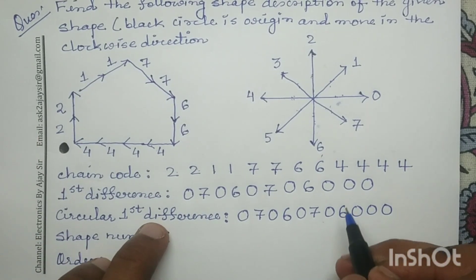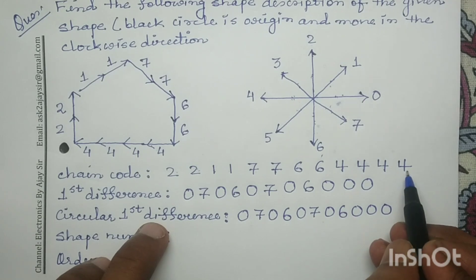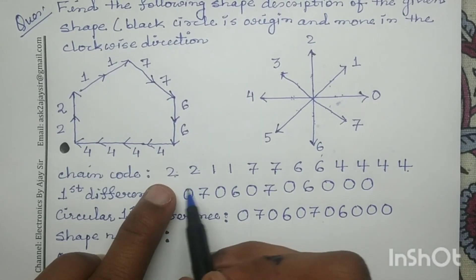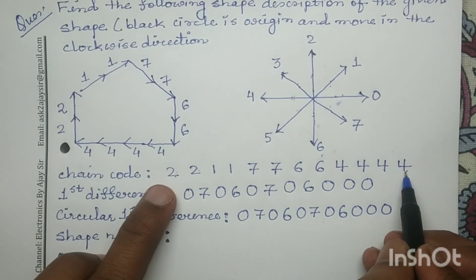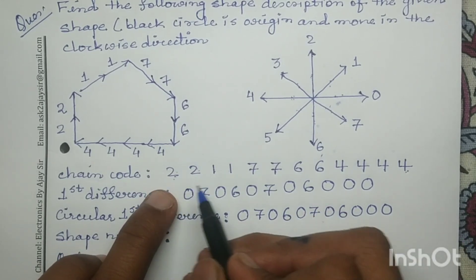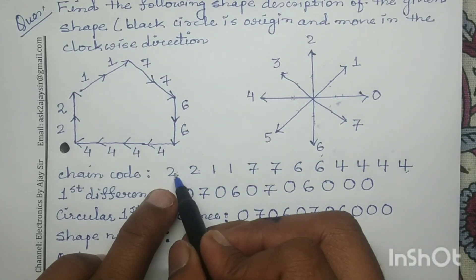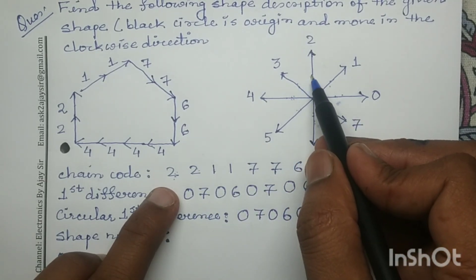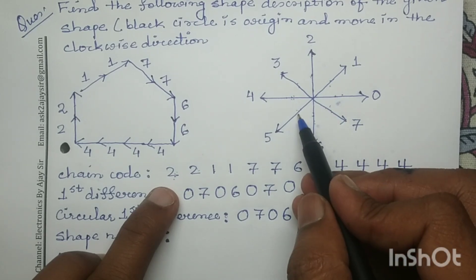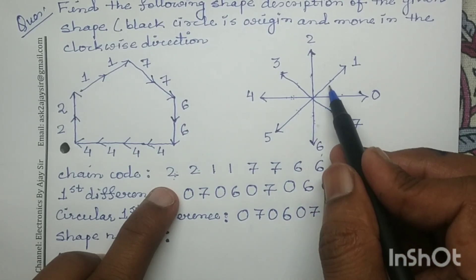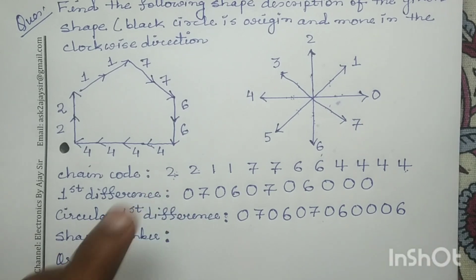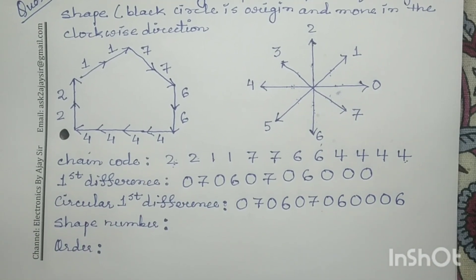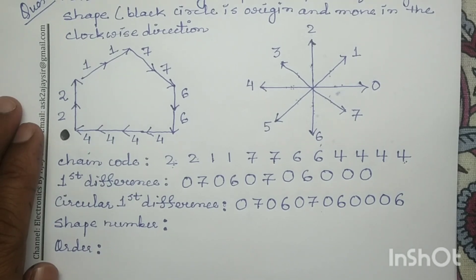To complete the circular first difference, we also need the difference between the last bit and the first bit of the chain code. The last bit is 4 and the first bit is 2, so the difference from 4 to 2 in the anticlockwise direction is 6. So I will write 6 here.